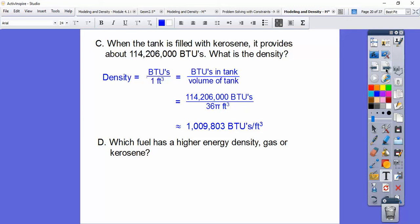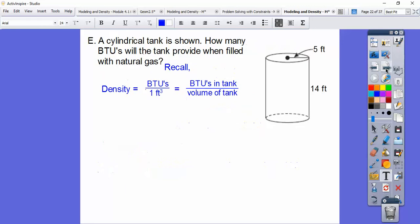So which fuel has a higher density, the gas or the kerosene? Well, the gas is only 1,027, so clearly the kerosene had a much higher energy density on that.